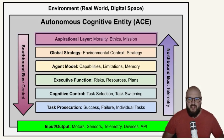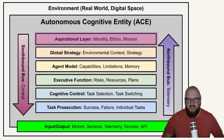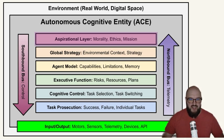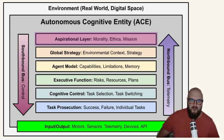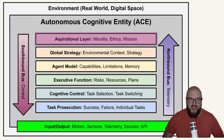We're going to go from top to bottom, then side to side. We start at the very top at the aspirational layer. The word 'aspiration' holds a lot of positive connotations — it's really thinking about what do you want to achieve, what's your dream. In here we have morality, ethics, and mission, grounding everything in a set of values. This is similar to what Anthropic's Claude has done with Constitutional AI, training it on things like human rights that we mostly all agree on.